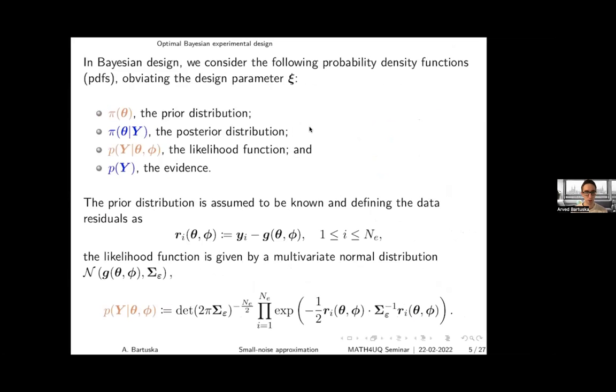I distinguish between densities of the parameters and density of the data by notation: pi for the parameters of interest and p for the data. I also color-code this — the orange ones we have access to and the blue ones we do not. We have to find an expression that only depends on the orange terms.